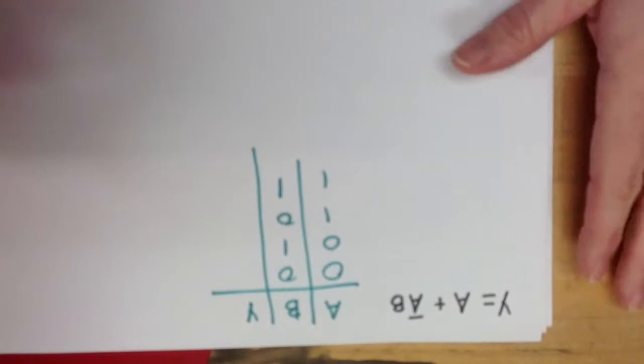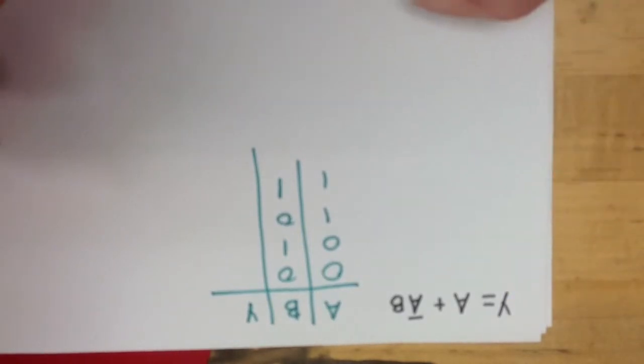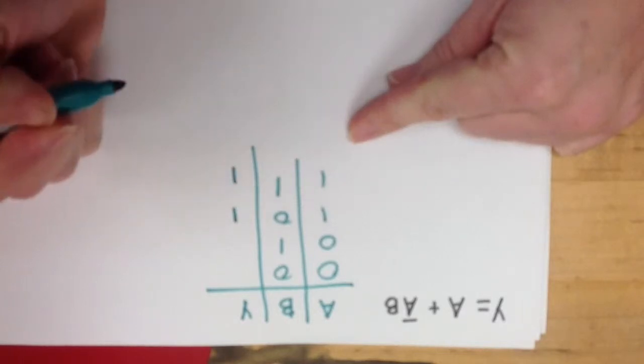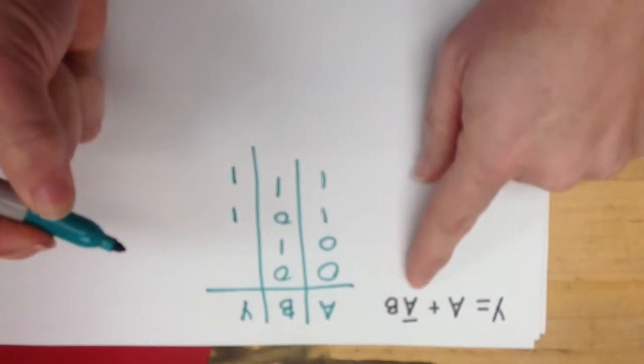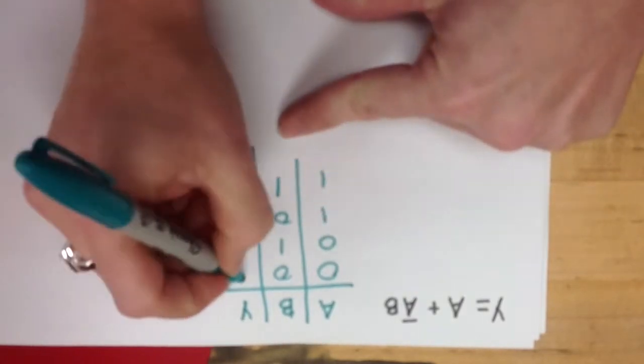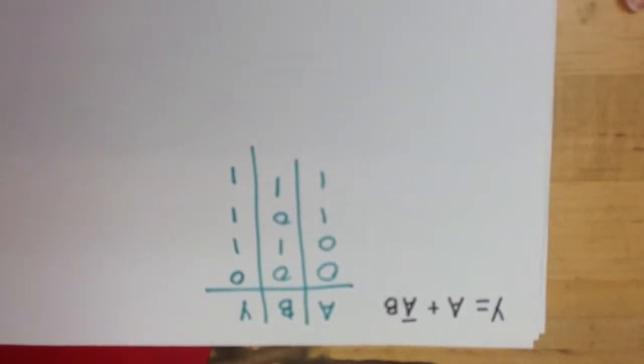First I need to put in a one everywhere A is one, so that will be here and here, and I need to put in a one where it's not A and B, so that would be here. So, this will be the truth table.